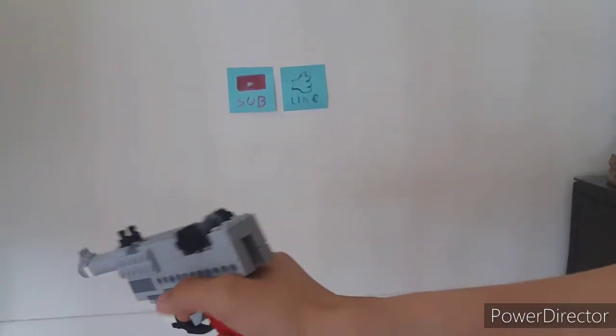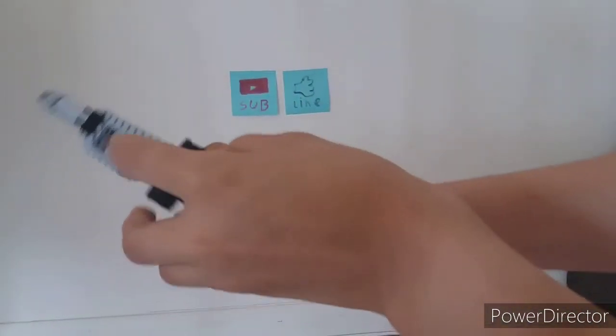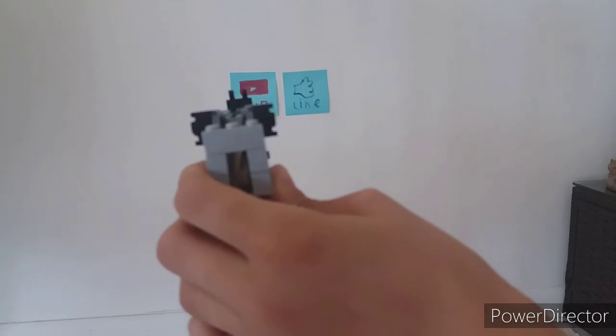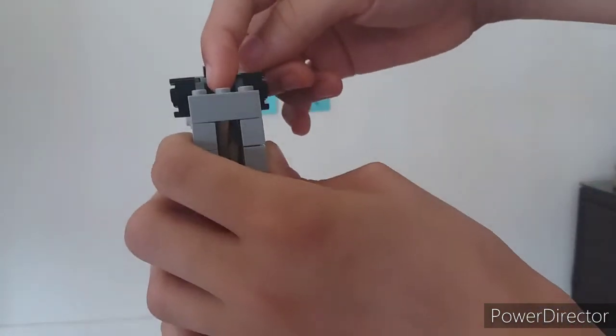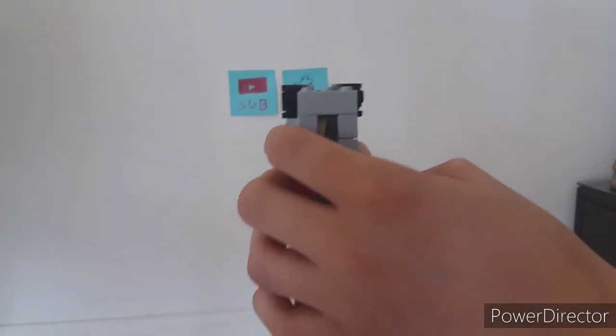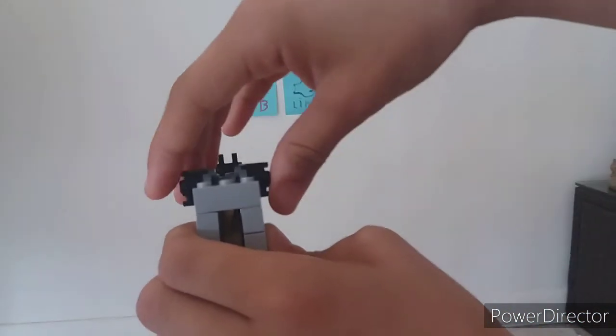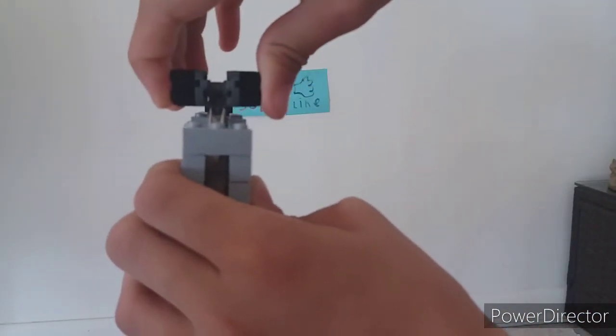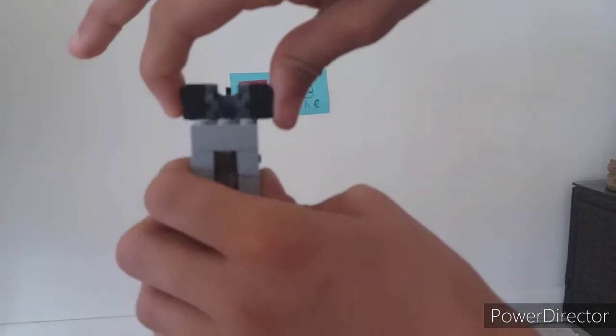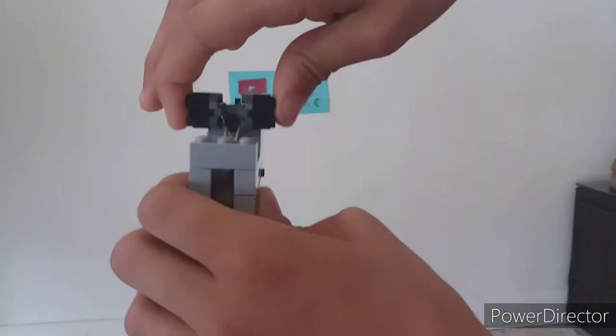So next I'll show you the charging handle. The charging handle actually is good because right here it actually has a slot through it just so you can see the iron sights. And the charging handle, instead of going back, it goes back and up to release the bullet. The Luger has a weird action like that.